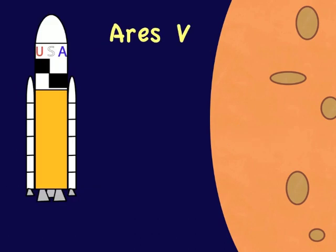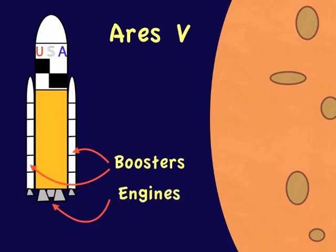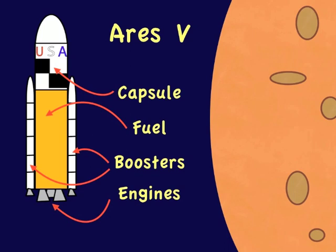The Ares 5 might look like an old-time rocket ship, but it actually uses really new technology from the space shuttle to complete its mission. It uses space shuttle boosters to help it get off the ground at liftoff. It climbs into orbit using space shuttle engines. Of course, the space shuttle engines are powered by space shuttle fuel, all to carry the largest payload ever into orbit, over 120 tons.